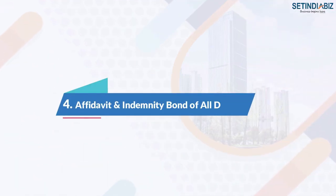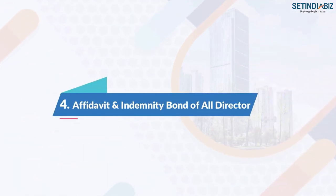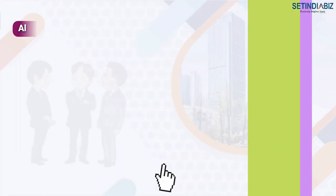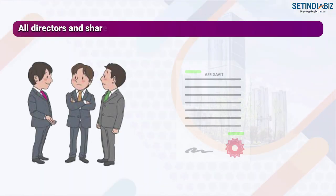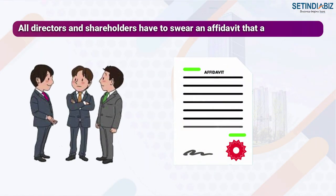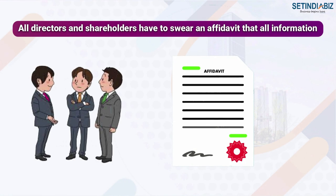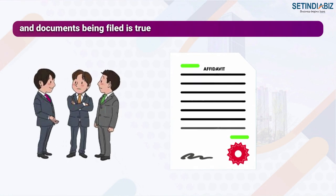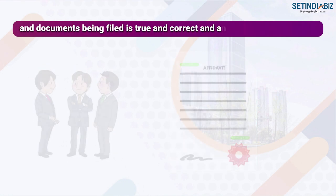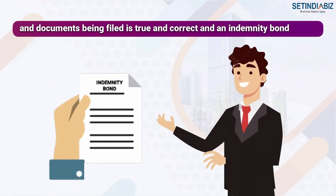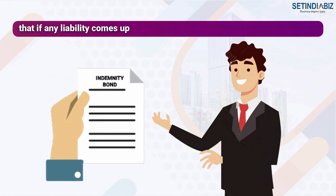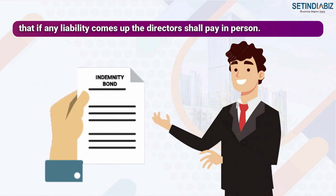Step 4: Affidavit and indemnity bond of all directors. All directors and shareholders have to swear an affidavit that all information and documents being filed are true and correct, and an indemnity bond that if any liabilities come up, the directors shall pay in person.